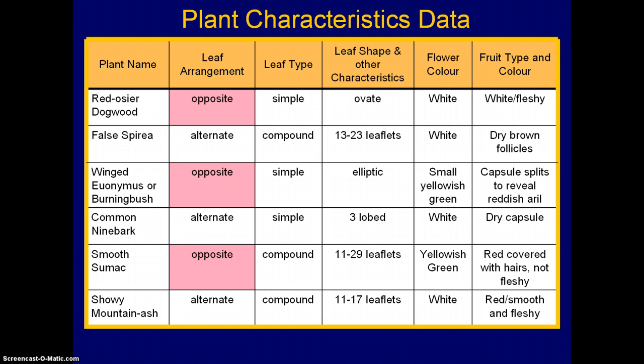Now back to our table of information that was shown in the last video. We're now going to use this information to actually construct the key. We had six different plants that we were trying to build into the key, and you may recall that there were three with opposite leaves and three with alternate leaves. So let's start building this key from this information, going back and forth between this table and back to the key as it's being built.